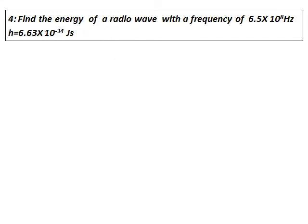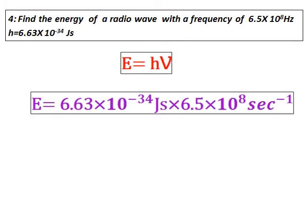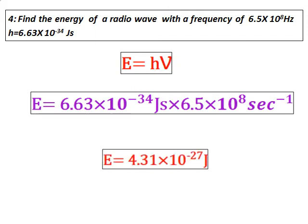Find the energy of a radio wave with a frequency of 6.5 × 10 to the power of hertz; the value of Planck's constant H is given. Since you need to use the relation between energy and frequency, use the formula E equals H nu. Substitute all the values — H is given, nu is given — and get the value of energy.